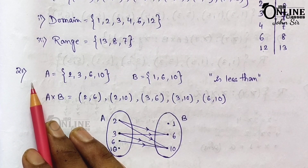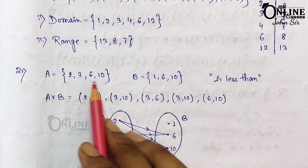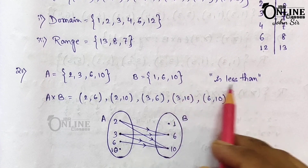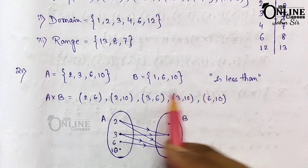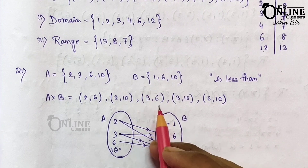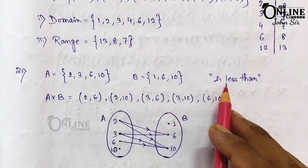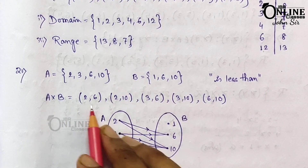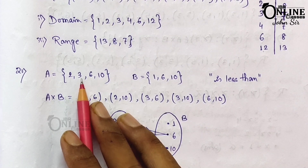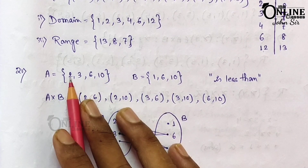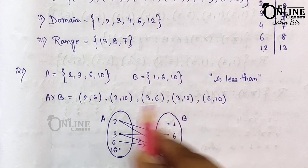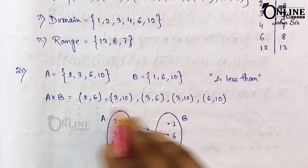Now sum number 21. If A = {2,3,6,10} and B = {1,6}, find the elements of the subset of A cross B corresponding to the relation R: x is less than y. So the ordered pairs where x < y are: (2,6), (3,6), (2,10), (3,10), and (6,10).